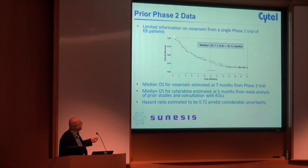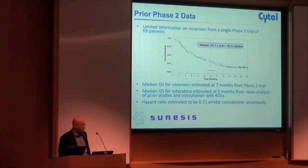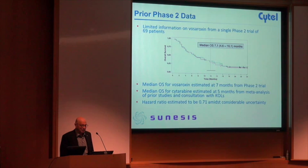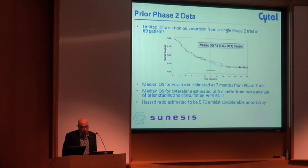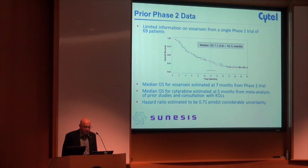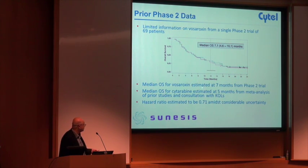The only prior data on Vosaroxin was single-arm data on 69 patients, and this was the basis for doing the phase 3 trial. It showed a benefit over what was already available — nothing had been available for over 15 to 20 years that was better than cytarabine, which had a median survival of four to five months. This single-arm trial showed a median survival of seven months.